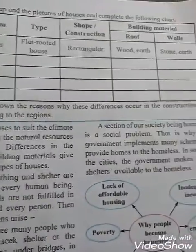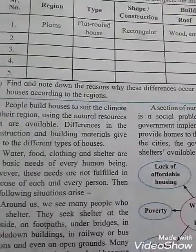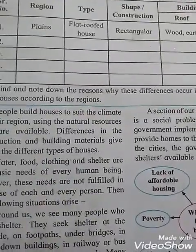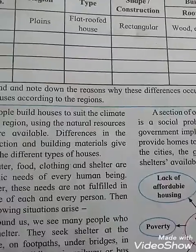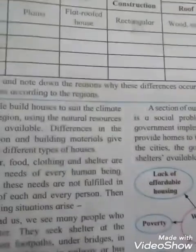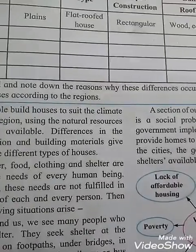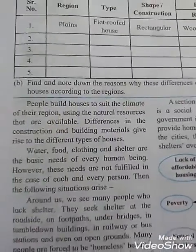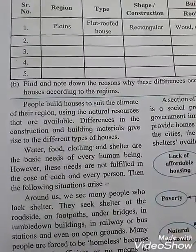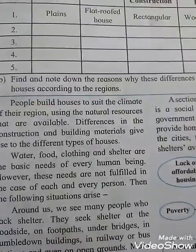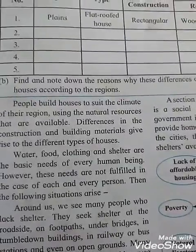Activity A2: Find and note down the reasons why differences occur in the construction of houses according to region. According to region, different types of houses are built. The type of house in different regions — regions force changes in the construction of houses.